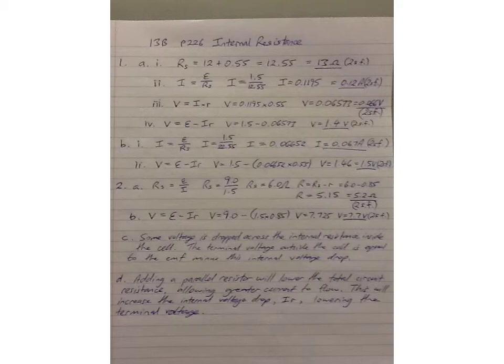So, this is kind of backwards from the last question. We can find the total series resistance in the circuit by using EMF over the current I, which they've given us, so that turns out to be 6 ohms. 0.85 ohms of that 6 ohms is the internal resistance, so the remainder must be the component connected.